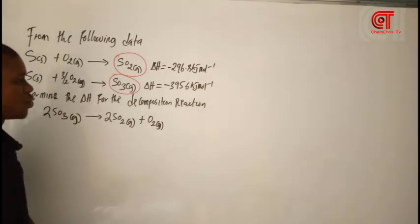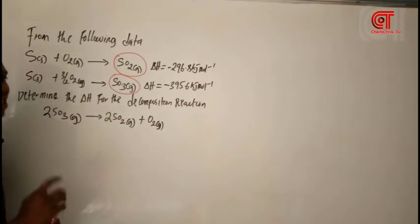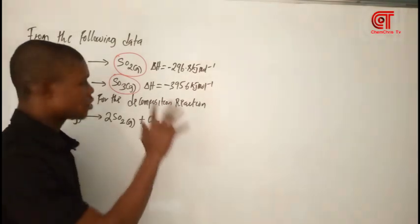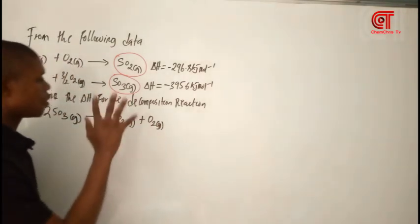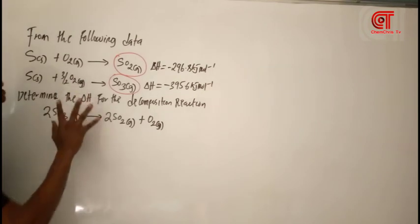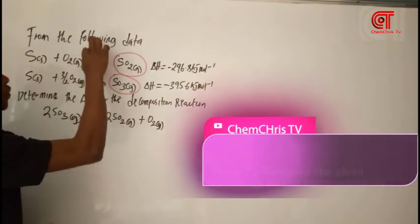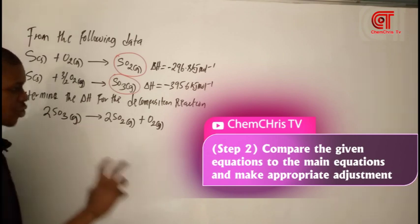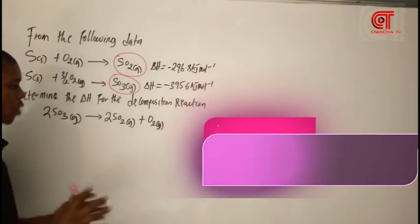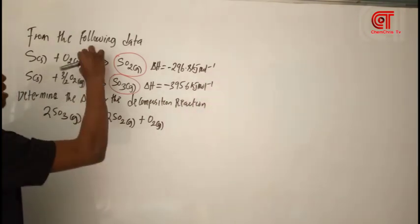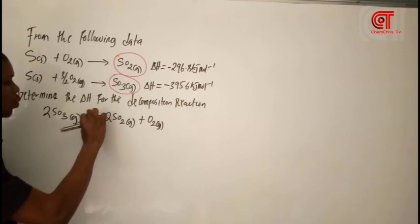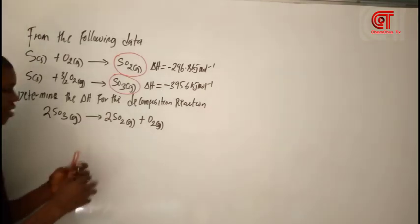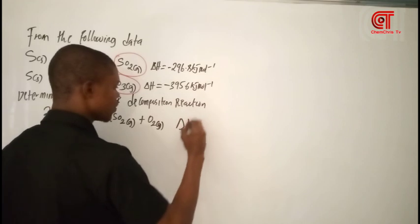Then the second step is the most important step — it's about 85% of everything. The second step is: compare each of the equations with the given equation and make appropriate adjustments. Now, you are actually calculating the delta H of the main equation here.